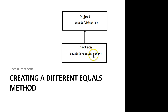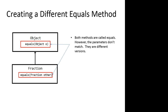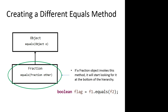Notice we've put an equals method in the fraction class, but the headers are not exactly the same. Instead of passing an object as a parameter, I'm going to pass a fraction as the parameter. Both methods are called equals, however the parameters don't match — they are different versions. This is really important. In the case of the toString method, the headers were exactly the same, so we were overriding it. We are not overriding the equals method here — we are writing a custom version. If a fraction object invokes this method, it will start looking for it at the bottom of the hierarchy and find this version.